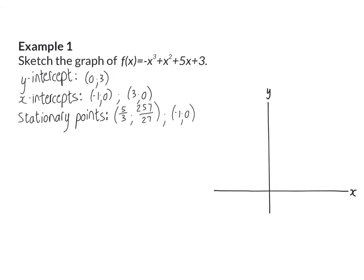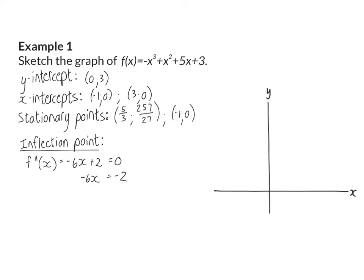Finally we need to determine the inflection point. The inflection point is determined by taking the second derivative and putting it equal to zero. Solving gives us x equals one third, and substituting one third into the original function gives us the coordinate for the inflection point.